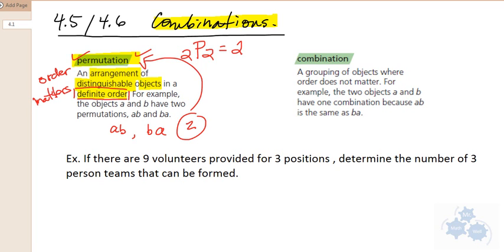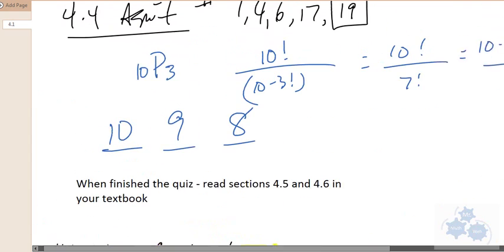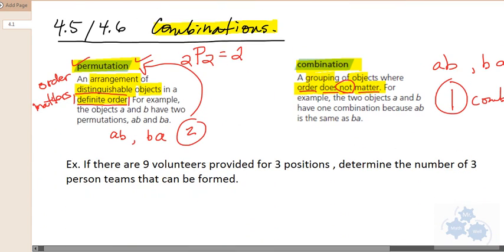Now over here, if we look at combinations, when we're talking about a combination, we're talking about a grouping of objects where order does not matter. So if we have A and B, and we rearrange them, B, A, these are both the same combination of letters. So here there is one combination. That's the difference. Order matters, and order doesn't matter.